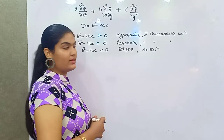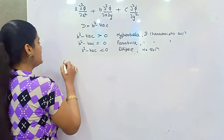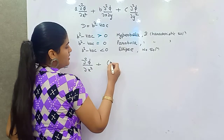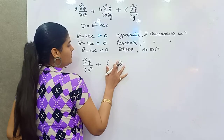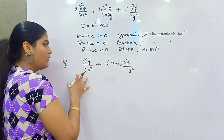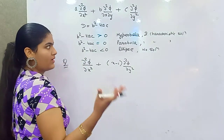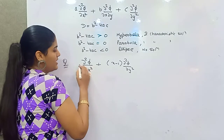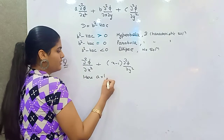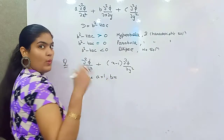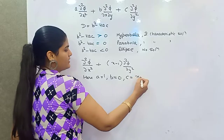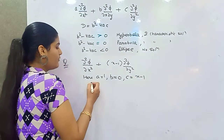Let's begin with a question. Say you have the equation: the second partial derivative of phi with respect to x squared, plus (x minus 1) times the second partial derivative of phi with respect to y squared. To find whether this is a hyperbola, parabola, or ellipse: A equals 1, B equals 0 (no x-y cross term), and C equals x minus 1.